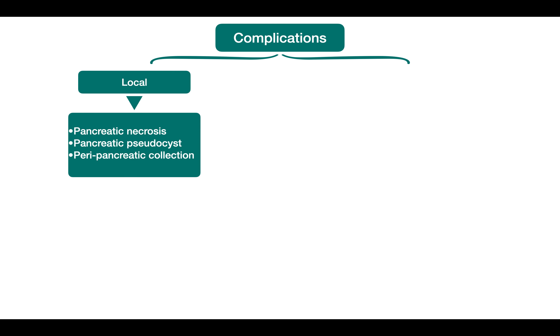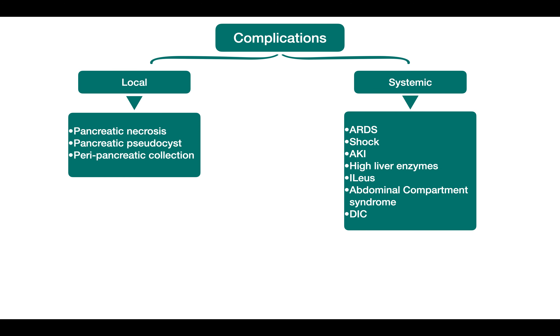Possible complications of pancreatitis can be divided into local complications — such as pancreatic necrosis, pancreatic pseudocyst, peripancreatic collection — or systemic and major organ failure, including ARDS, shock, AKI, high liver enzymes, ileus, abdominal compartment syndrome, and DIC. The usual trigger behind all these complications is severe systemic inflammatory response syndrome (SIRS).